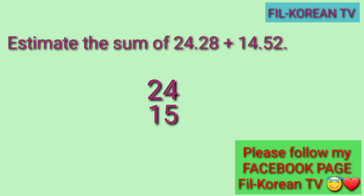Ngayon, mag-plus na tayo. Plus natin from right to left. 4 plus 5 equals 9. And 2 plus 1 equals 3. So, the estimated sum is 39. Ganyan po ang pag-estimate — i-round off muna natin bago natin i-add. Ang estimated sum ay hindi exact answer doon sa given problem, pero siya yung pinakamalapit na number doon sa exact answer.